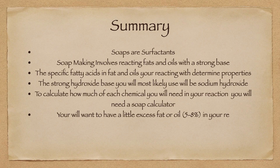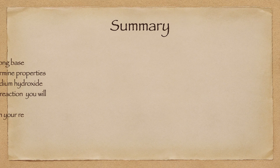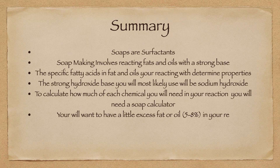So in summary: soaps are surfactants. Soap making involves reacting fats and oils with a strong base. The specific fatty acids in the fats and oils you're reacting will determine the properties of your final bar. The strong base you will most likely use will be sodium hydroxide. To calculate how much of each chemical you will need, you will need a soap calculator or saponification table. You will want to have a little excess fat or oil — five to eight percent — in your recipe, called super fatting, just to be on the safe side.